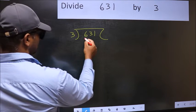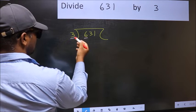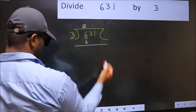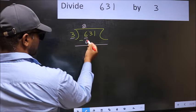Here we have 6 and here 3. When do we get 6 in 3 table? 3 times 2 is 6. Now you should subtract. 6 minus 6, 0.